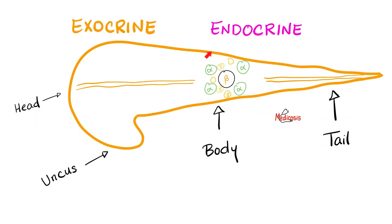Here is the endocrine pancreas: beta for insulin, alpha for glucagon, delta for somatostatin.